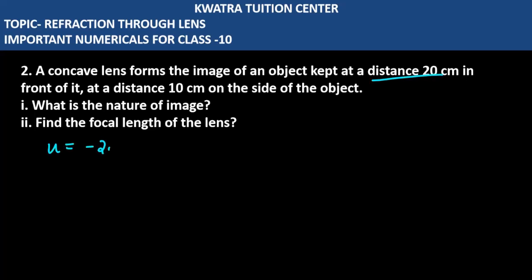The image is at a distance of 10 centimeters on the side of the object. Here v is given as minus 10, on the same side. We need to find the nature of the image.